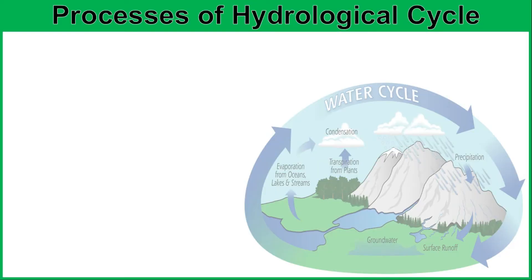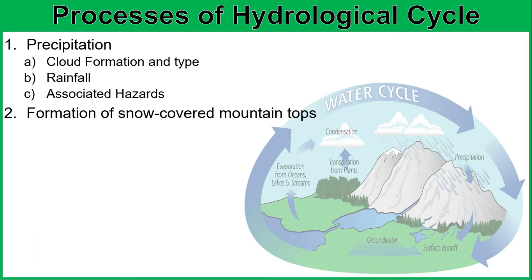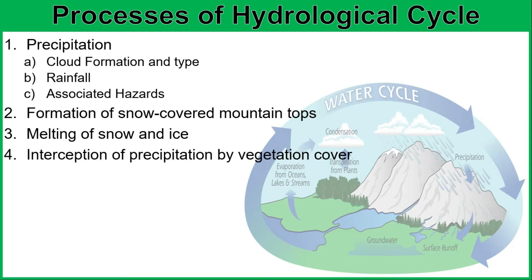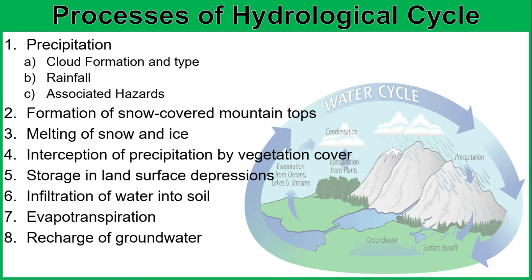Because the hydrological cycle is a cycle, it does not necessarily have a starting or ending point. But to be organized, we're going to follow a certain flow. We'll start with precipitation — under this we have cloud formation and type, rainfall-associated hazards, followed by the formation of snow-covered mountaintops and melting of snow and ice. Next is the interception of precipitation by vegetation, followed by storage in land surface depressions, infiltration of water into soil, evapotranspiration, recharge of groundwater, and finally, river runoff.